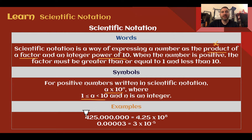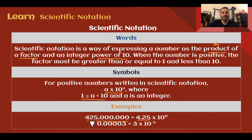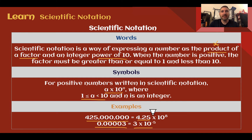We can see in our example: 425 million written in standard form equals 4.25 times 10 to the 8th power. So we have our factor that's between 1 and 10, times 10 to some power. Over here we have our standard form — no exponents for standard form — and then we have our scientific notation version of the same number. Both the left and right numbers represent the same value, just one is written in standard form and one in scientific notation.